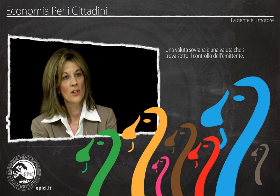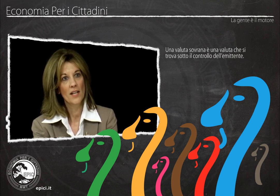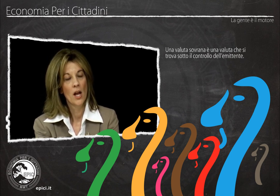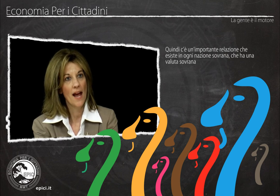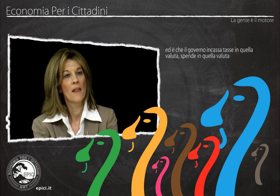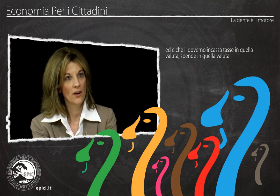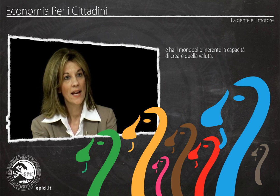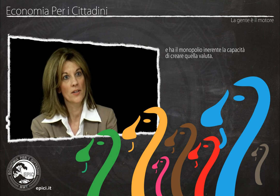A sovereign currency is a currency that is under the control of its issuer. So there is an important relationship that exists in any sovereign country that has a sovereign currency: the government collects taxes in that currency, spends in that currency, and has a monopoly over the ability to create that currency.